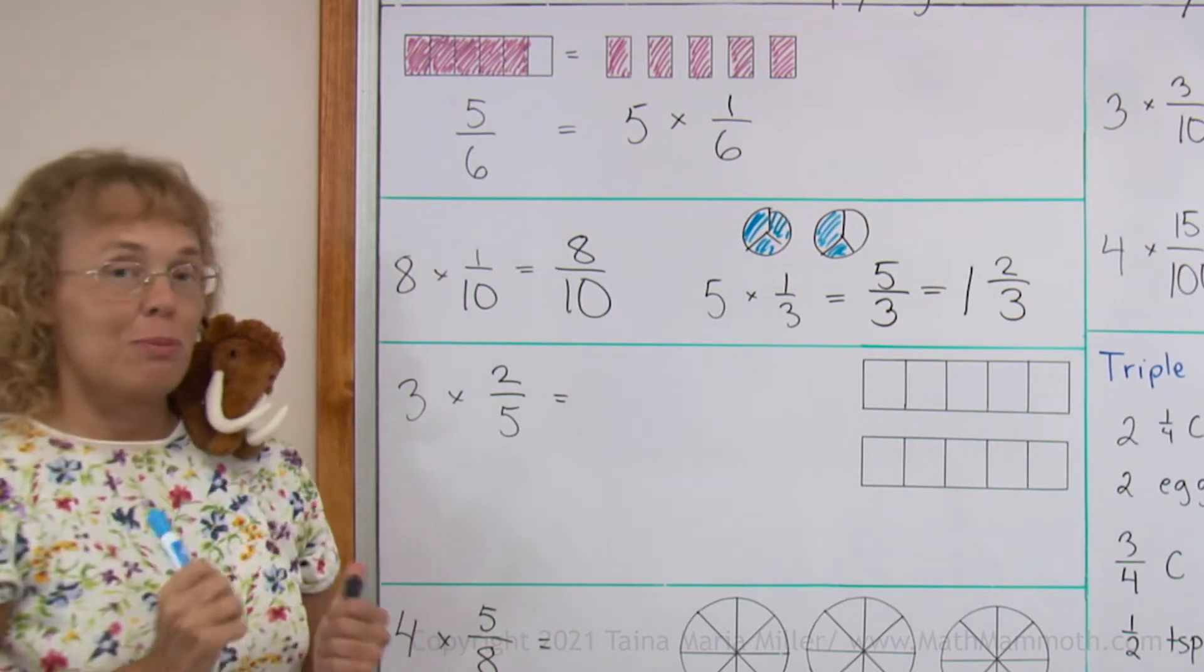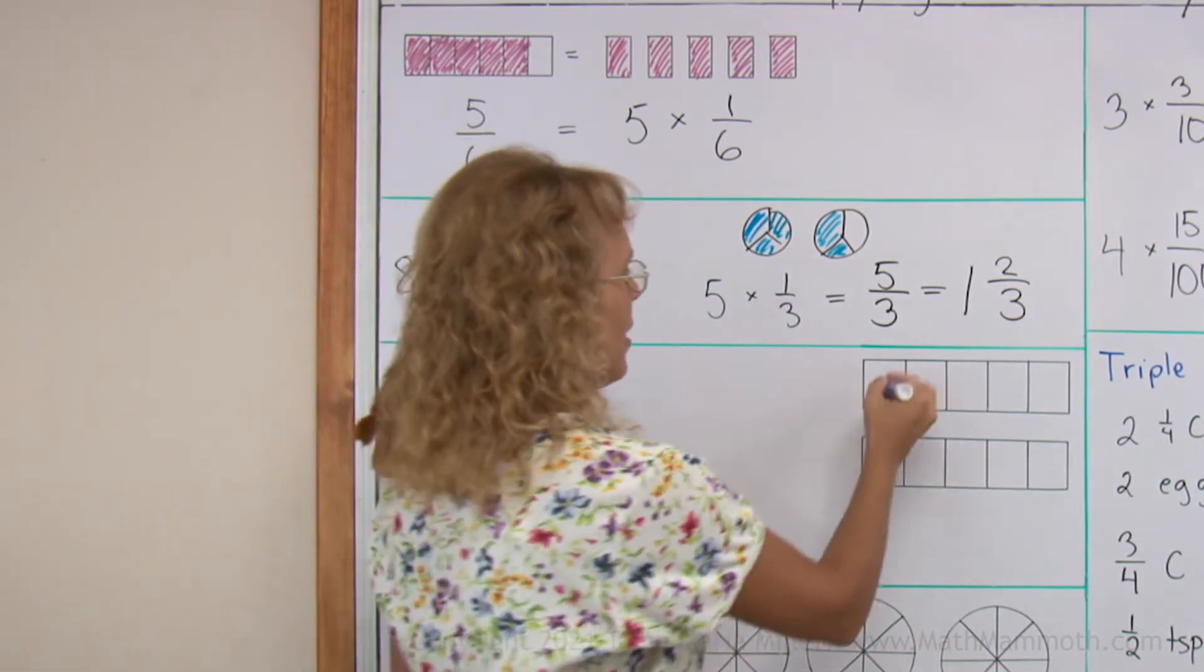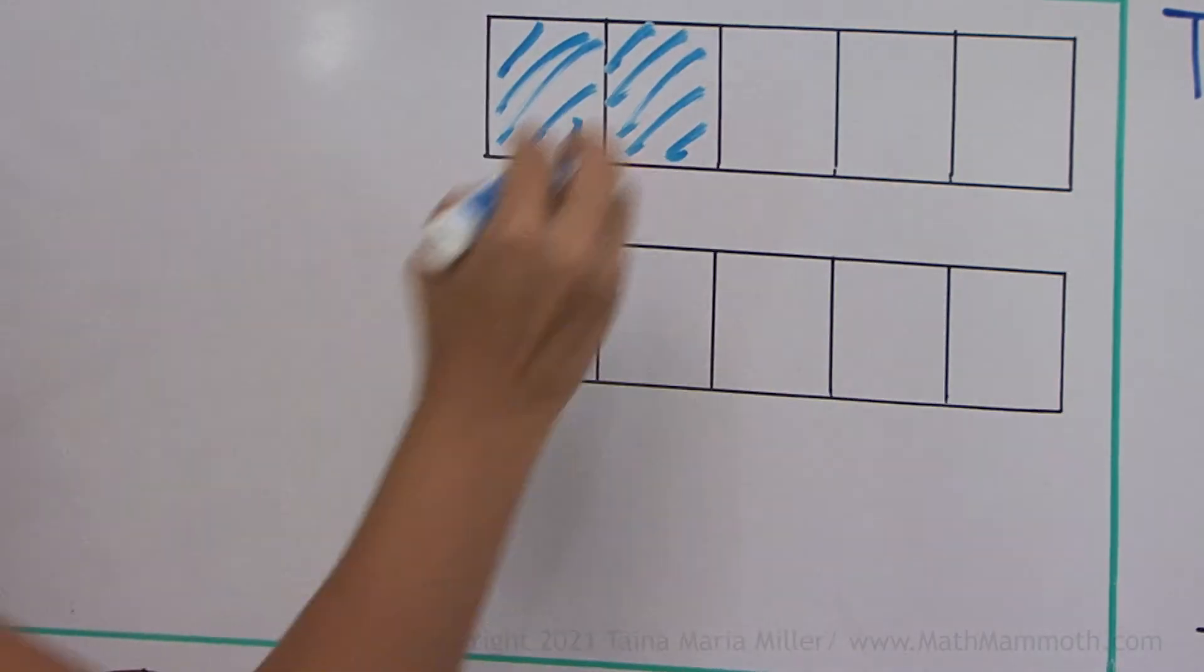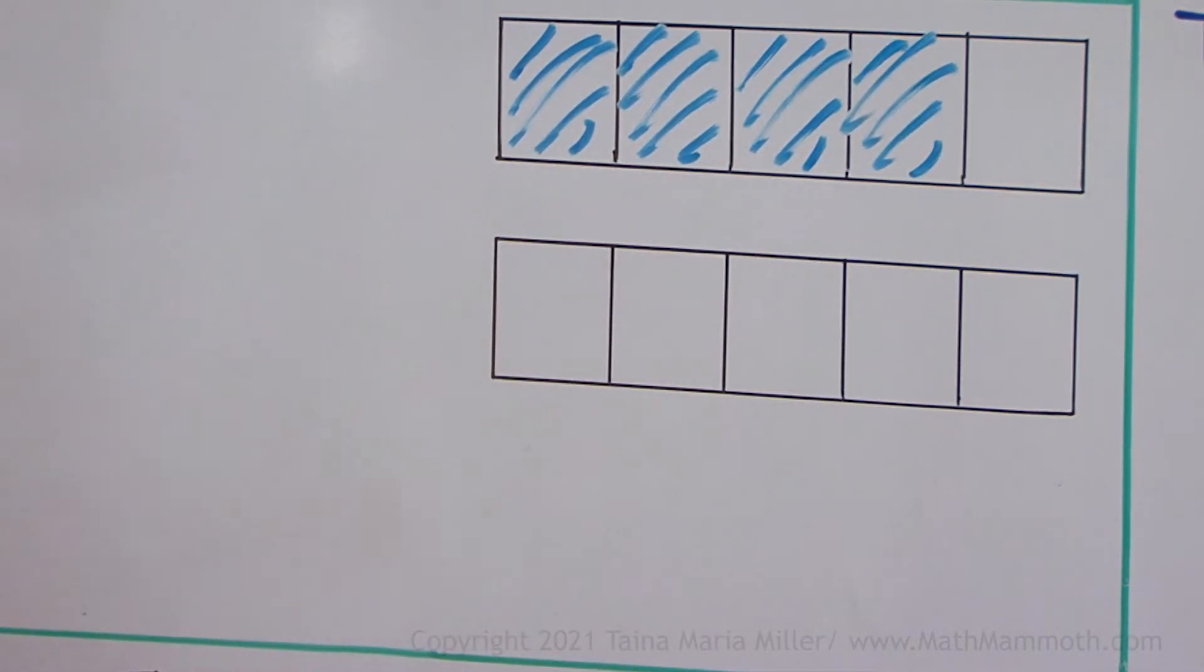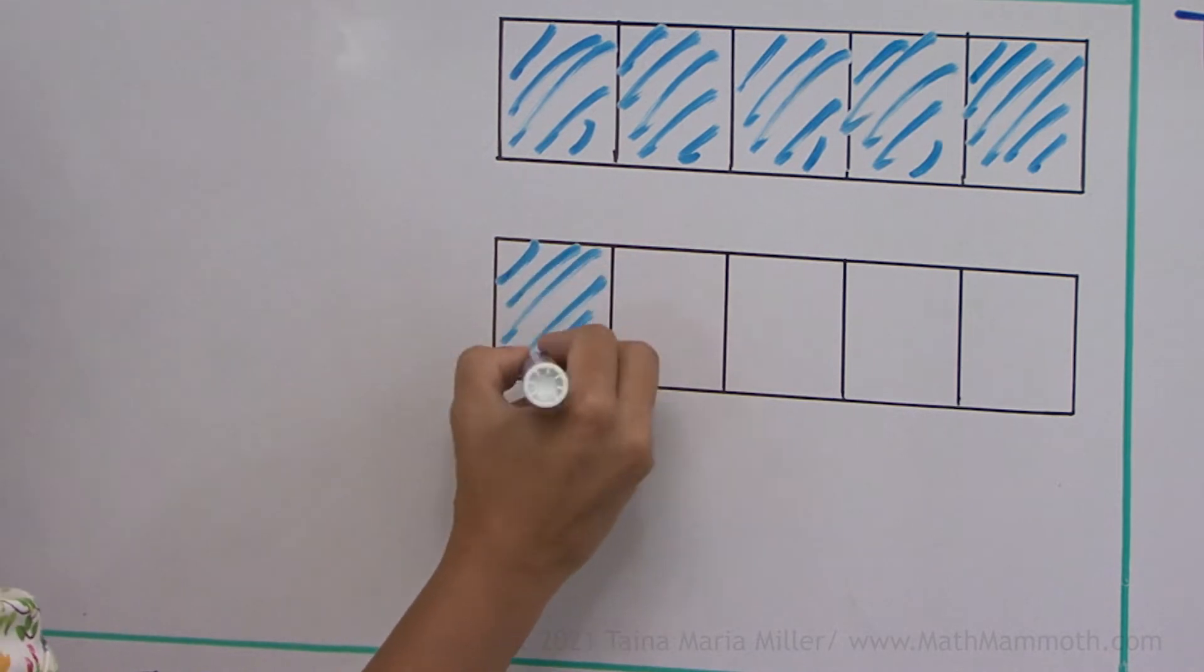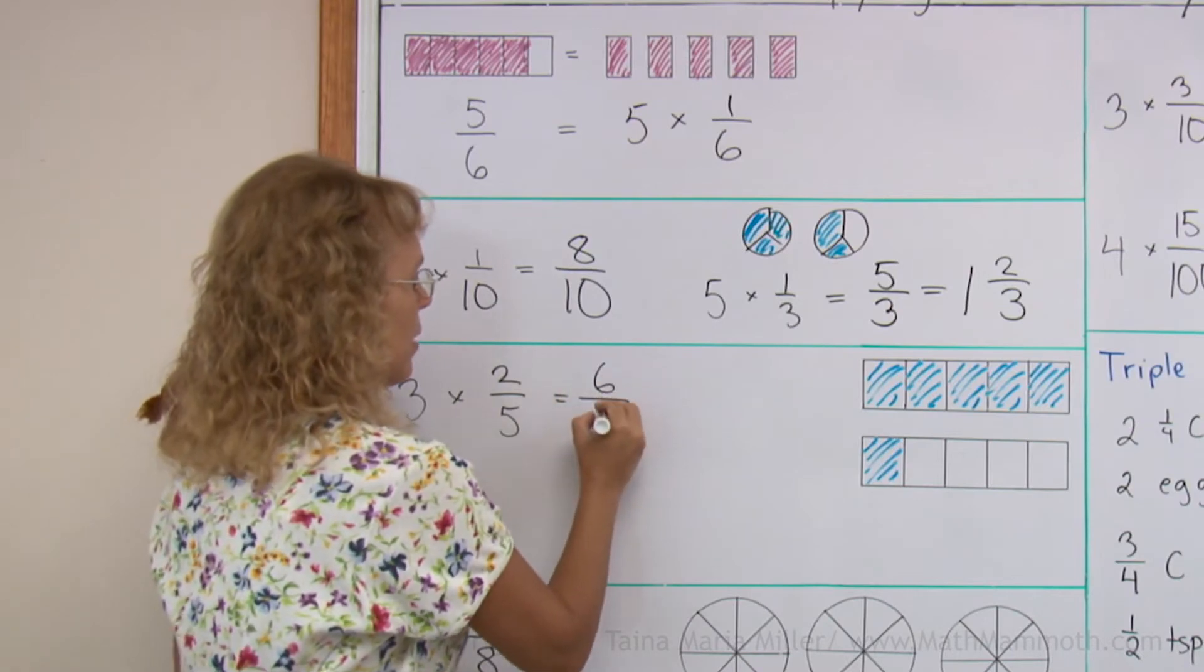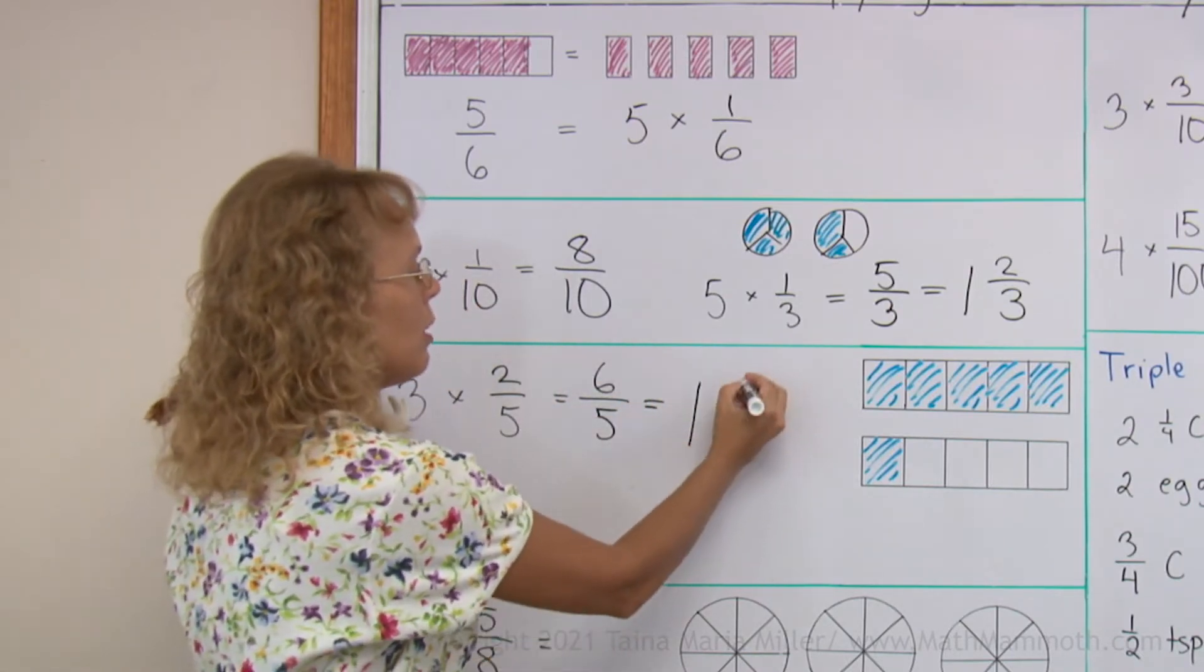We can also do it by coloring. I can color 2 fifths here 3 times. Here's my first 2 fifths, and then my next 2 fifths, and then one more time I will color 2 fifths. A fifth and another fifth from here. So we see we get a total of 6 fifths. But that is also, as a mixed number, 1 whole and 1 fifth.